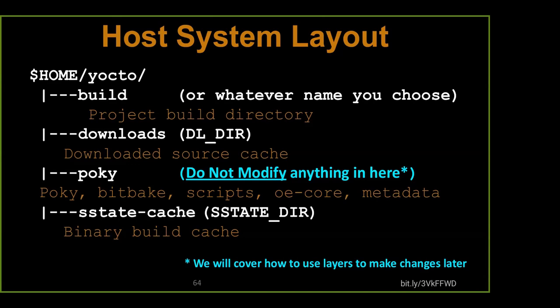The shared state cache generally should be put at the same top level, so you can share it among multiple builds. Let's say you're using an ARM architecture but have to build multiple OSes — you might have multiple build directories, but you still want to share the downloads and the shared state cache so you don't keep rebuilding from scratch. Put them up at this top level so you can share them across multiple builds. There might be 5, 10, 15 build directories — perfectly acceptable at this level.